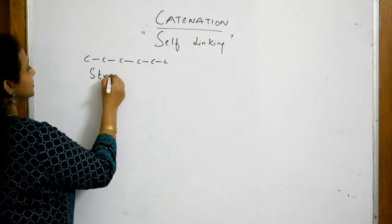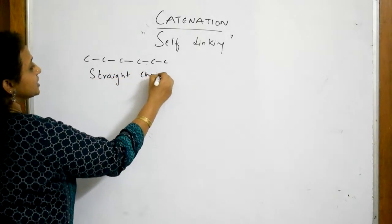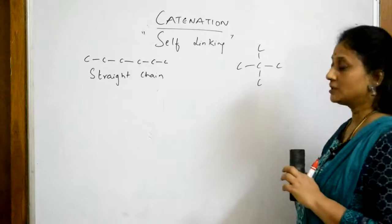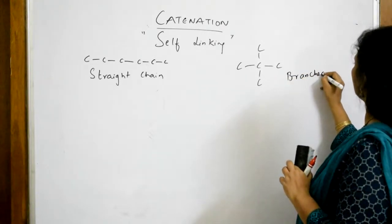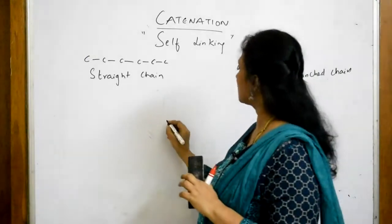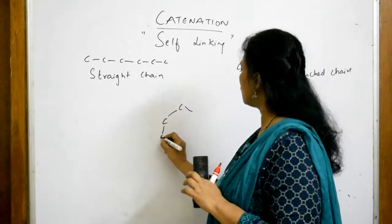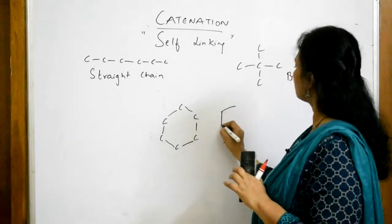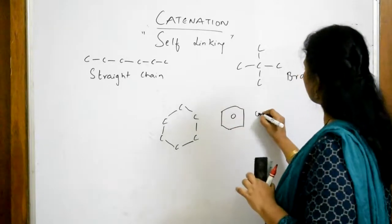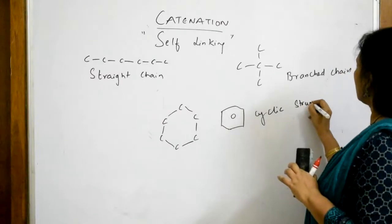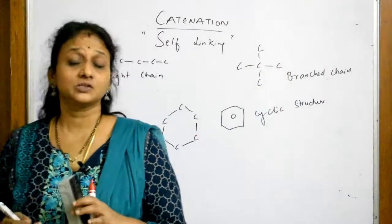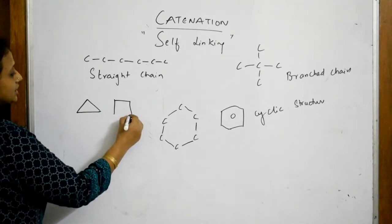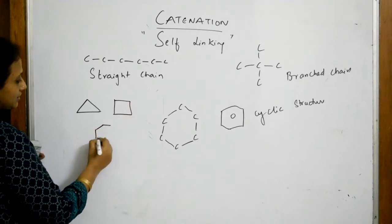It can also self-link and form a branched chain. This is branched chain. It can also together form a compound like benzene forming cyclic structures. It also has a capacity of forming cyclo compounds - cyclo propane, cyclo butane, cyclo heptane.